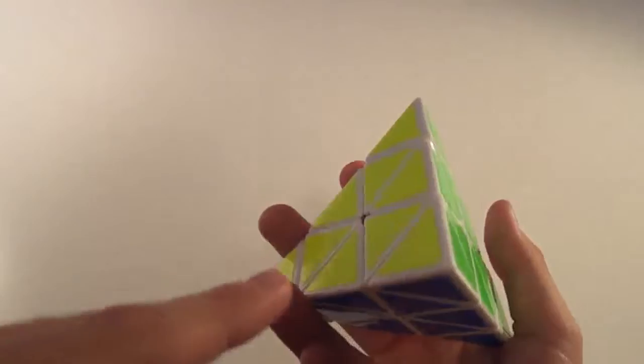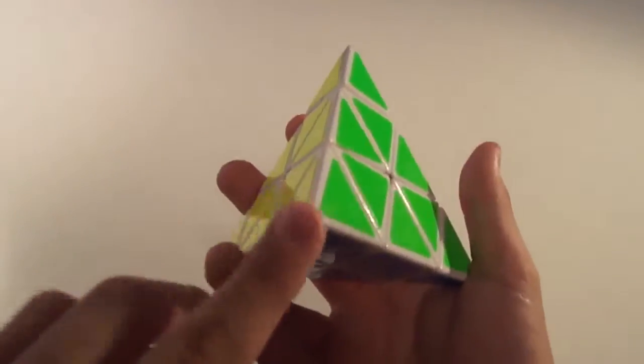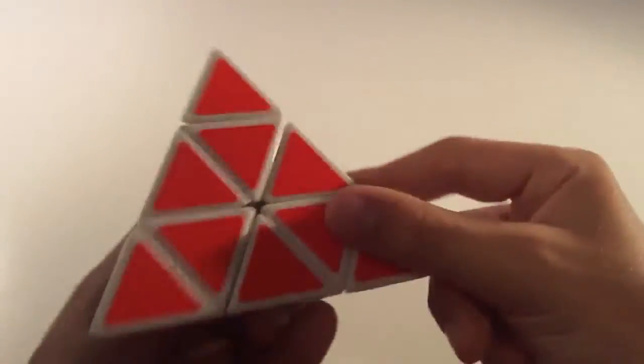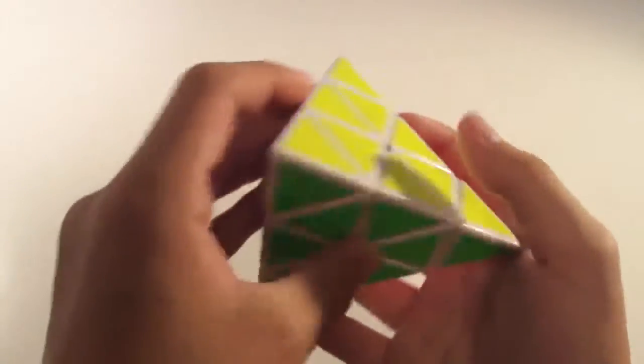So it would be like as if you're facing that side with the point facing you, which you would never do when you're solving the Pyraminx. You'd always want a side facing you, never a point. So those are R and L.